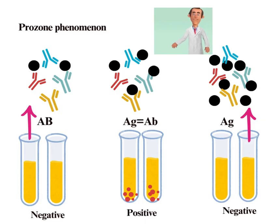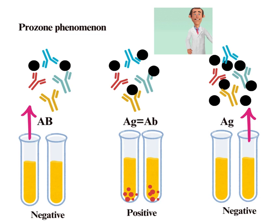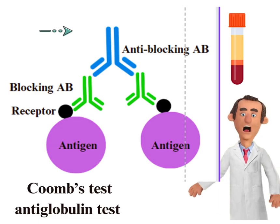What is the prozone phenomenon? Sometimes, in doing the tube agglutination test for diagnosis of acute brucellosis, we may note the prozone phenomenon. This means the absence of agglutination in tubes containing high concentrations of antibodies, but positive results in tubes containing lower concentrations. The cause is the presence of high-level blocking antibodies, or excess of antibodies.